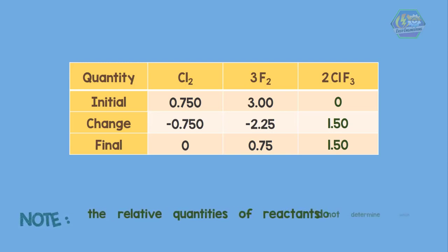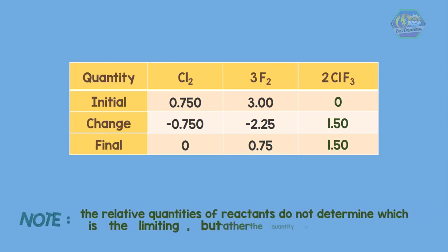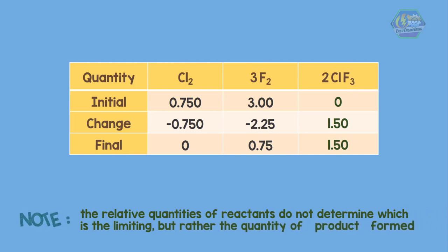A major point to note: the relative quantities of reactants do not determine which is the limiting, but rather the quantity of product formed, which is based on the molar ratio in the balanced equation. So that's it, that is all for now. I hope you learned something today. Once again, this is Ease Engineering.